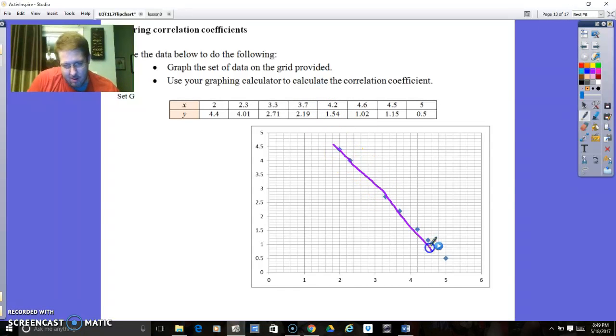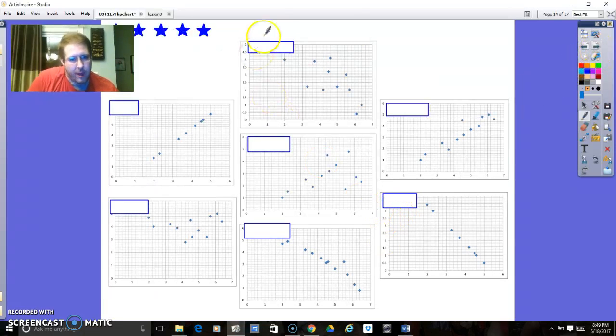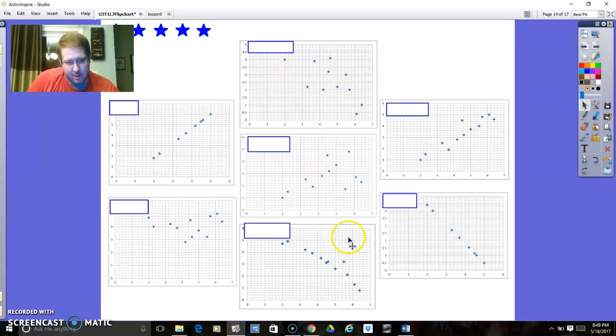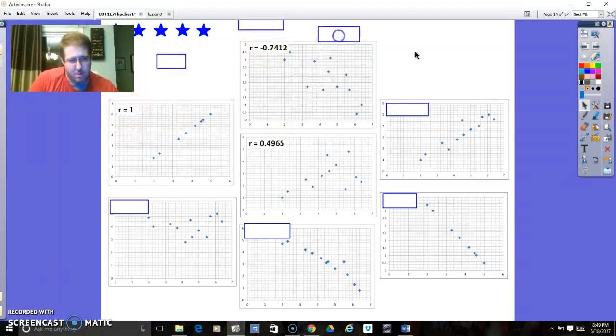Set G looks like, once again, all the data is in a direct line. And I'm going to guess, I know it's not really much of a guess, but it's going to be R is going to be negative 1. Because it's going down. And it's in a straight line. Okay. So then what you can do is you can guess. So if you can do what I was just doing for the last one, you can guess on all these. Just stop the video. Make your guesses. And then watch as I reveal them. Here I go.